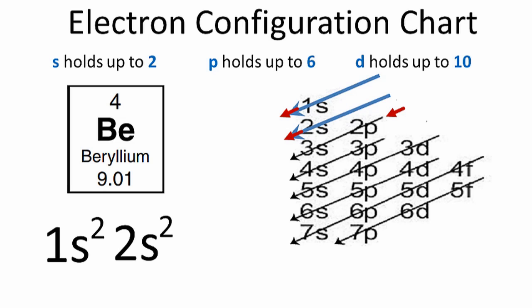So we're done. This is the electron configuration for beryllium: 1s² 2s². This is Dr. B, and thanks for watching.